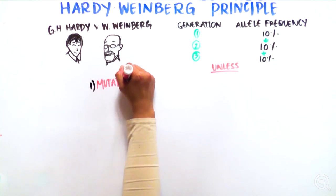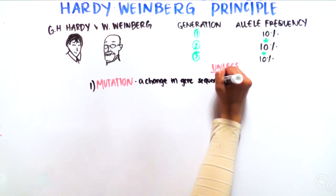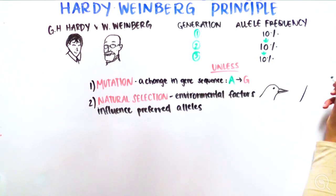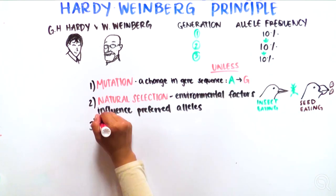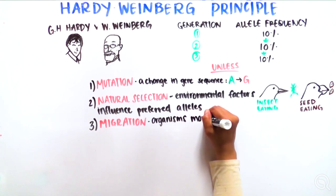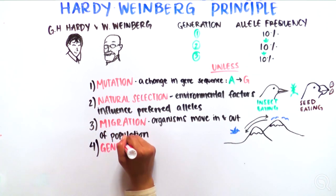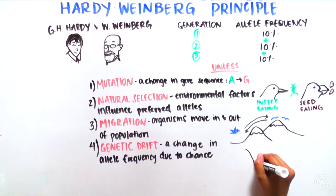such as mutation, which is a change in the gene sequence, natural selection, which is an environmental factor's influence on which alleles are more preferred, migrations, when organisms move in or out of a population, and or genetic drift, a change in allele frequency due to random chance.